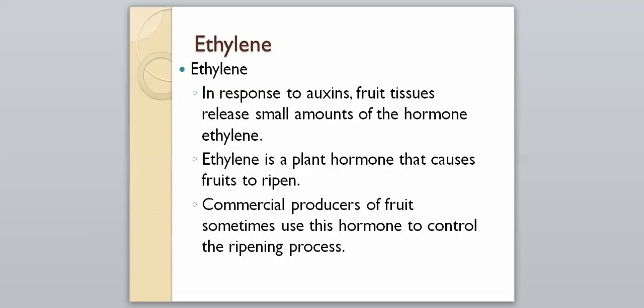Our last hormone is ethylene. In response to auxins, fruit tissues release small amounts of the hormone ethylene. Ethylene is a plant hormone that causes fruits to ripen. If you've ever bought peaches and put them in a brown paper bag to help them ripen, it's because they're all producing ethylene and it gets trapped inside that bag, helping them mature faster. Commercial producers of fruit sometimes use this hormone to control the ripening process.